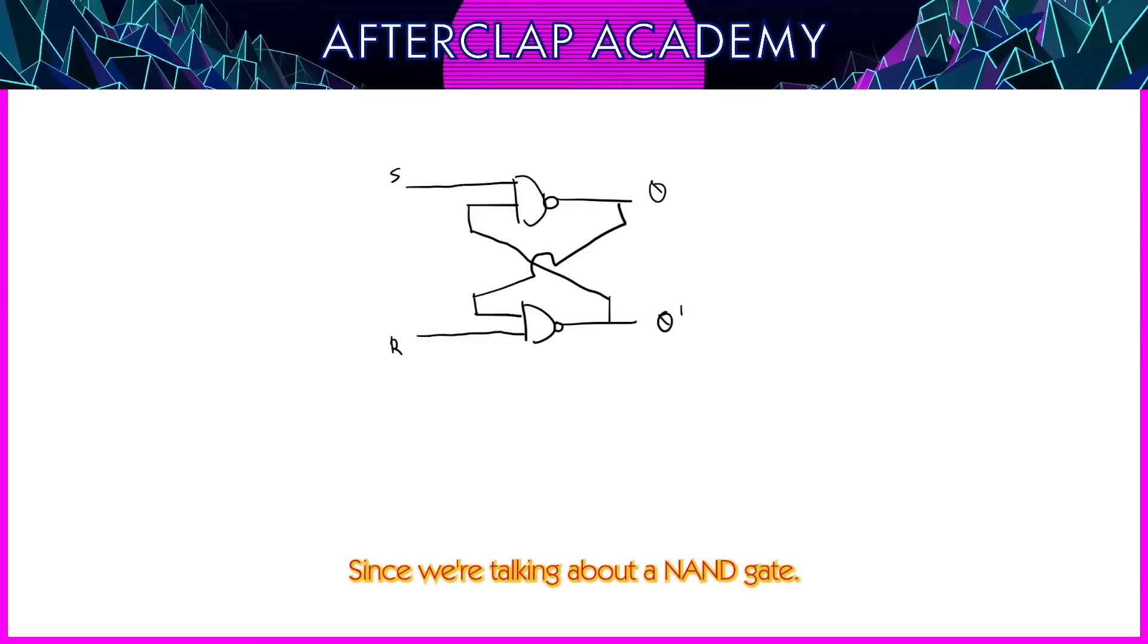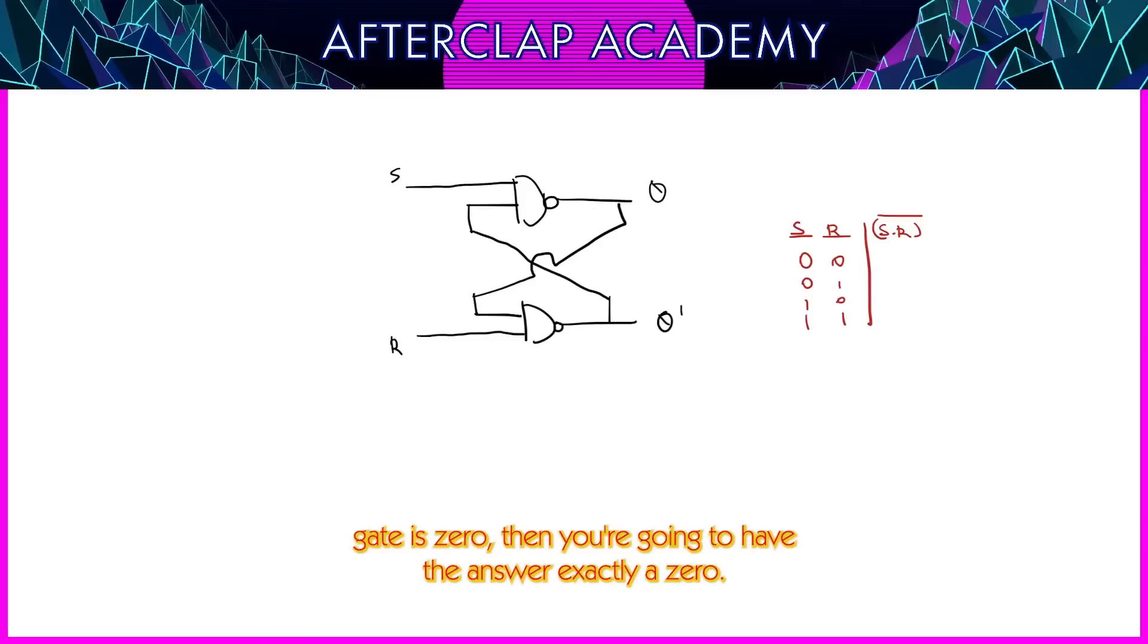In an SR latch, since we are talking about NAND gates, it is important to obtain the truth table of a NAND gate. So let's say we have S and R and we put them in a NAND gate. This is what we're going to get: 0, 0, 1, 1, 0, 1, 0, 1. Logically, this is going to be the opposite of an AND gate. And we know for a fact, whenever one of the inputs of an AND gate is zero, then you're going to have the answer exactly as zero. So the opposite case would be that whenever you have a zero in the input part, you're going to have the output as one. So 1, 1, 1, 0. That's it.